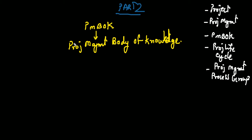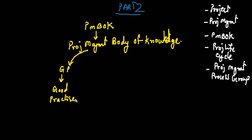So PMBOK is a guide — a guide to the Project Management Body of Knowledge. PMBOK is basically something called a GP, or 'good practice.' Good practice means: if you use the knowledge in the PMBOK on a project, you're going to have a successful outcome nine times out of ten. So you have a high success rate — that's the meaning of good practice.